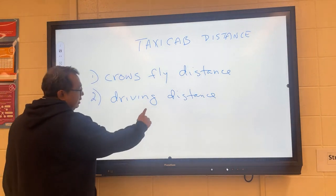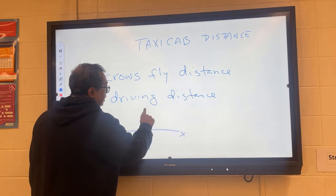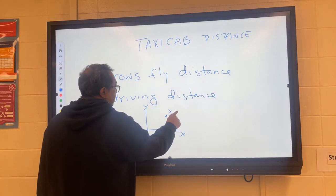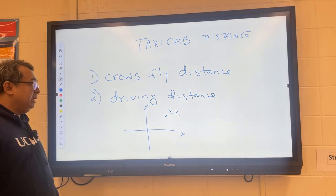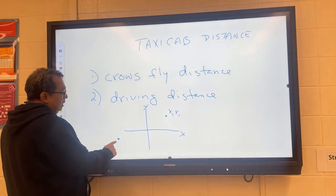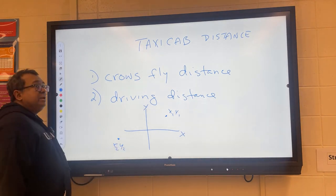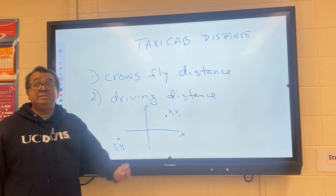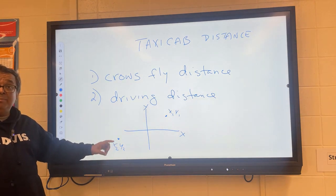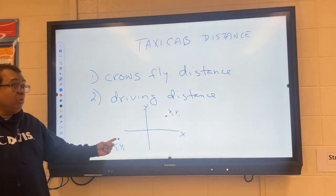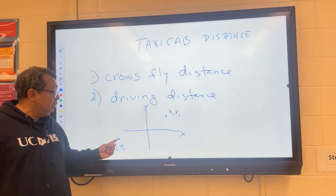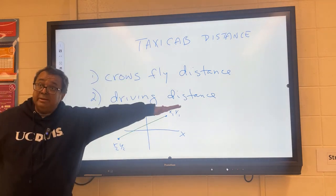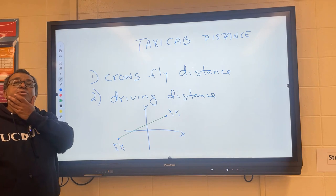Imagine we have a grid with x and y. This location over here we'll call (x1, y1), and there's another point we'll call (x2, y2). This is called crow's fly distance because if you release a crow from here — imagine this is a map of some territory — the crow will fly directly to the other place, like that.